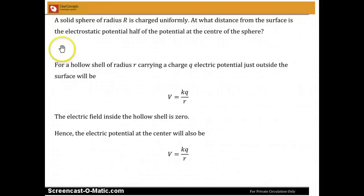The question posed is this: A solid sphere of radius R is charged uniformly. At what distance from the surface is the electrostatic potential half of the potential at the center of the sphere?